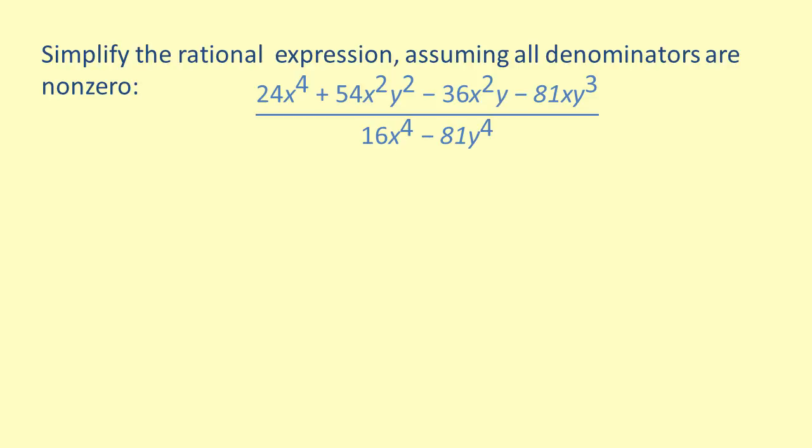First, we can simplify the numerator using grouping. The first set of parentheses will group 24x to the fourth power plus 54x squared y squared, and the second set of parentheses will group 36x squared y minus 81xy cubed.